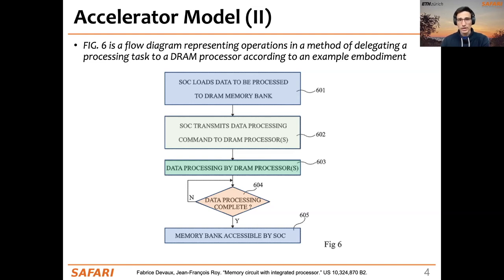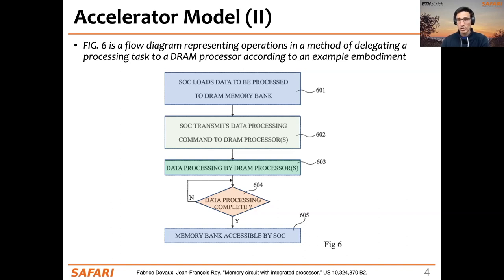After that, the processors in DRAM perform operations and execute a kernel, while the CPU can continuously check when the kernel on the memory side has finished. After that, the memory banks on the PIM-enabled memory become accessible again to the host processor, which can retrieve the results and copy them to the main memory.